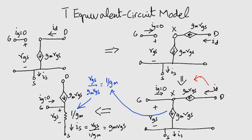This model shows that the resistance between gate and source looking into the source, denoted by the green arrow, is 1 over GM. However, the resistance between gate and source looking into the gate is infinite. These insights into the circuit make the T model very useful in certain applications.